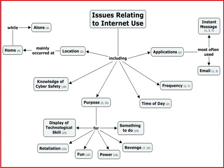There are a number of factors associated with cyberbullying and cybervictimization. In relation to internet use, it was found that location, purpose, frequency, time of day, and applications were all predictors of cybervictimization. It was also found that knowledge about cyber safety predicted cybervictimization. About 86% of cyberbullying occurred at home, with almost 63% occurring alone. Email and instant messaging were found to be the most frequently used applications through which cyberbullying occurred.